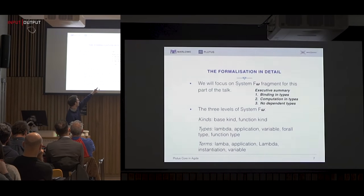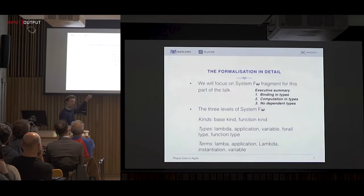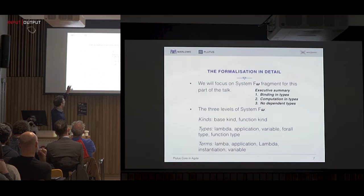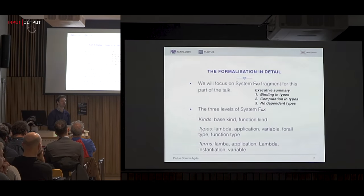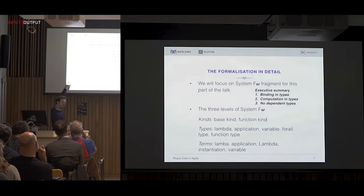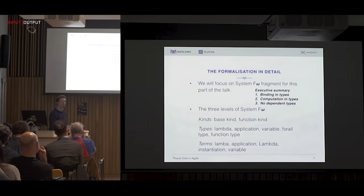At the term level, we have regular lambda and application, big lambda for abstracting over a type, and instantiation — which is really application for a type variable — and variables. So there are sort of two overlapping copies of lambda calculus here. The key point is we have bindings in types and computation in types, but we don't have dependency: terms don't appear in types, so information only flows downward. Types can refer to kinds, terms can refer to types and kinds, but there's no circularity, which makes it not as hard as dependent types.